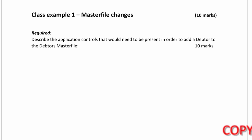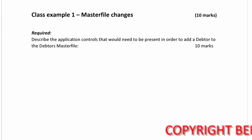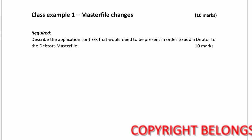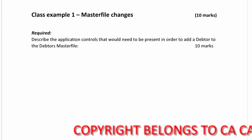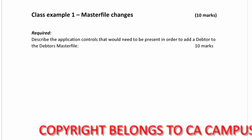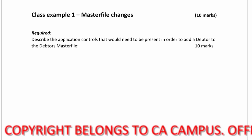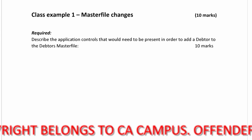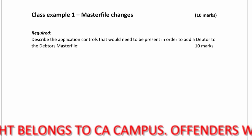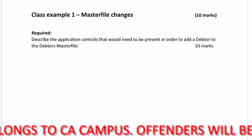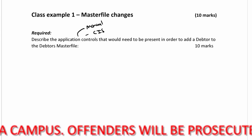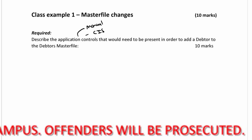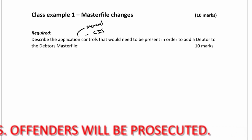Class example 1: master file changes. Describe the application controls that need to be present in order to add data to the debtor's master file. This is a purely theory question — you've got to consider all the application controls that would be necessary to input a change of master file into a system. Application controls include both the manual and the computer information system controls around the inputs of data into the system.